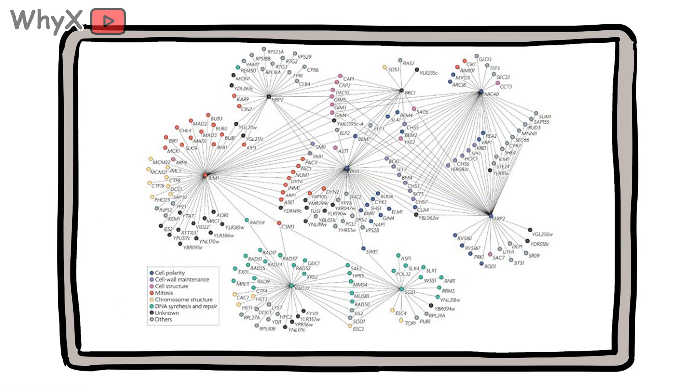But every edit comes with risk. Genes interact in networks, not isolation. Tweak one, and you might accidentally ripple through others.